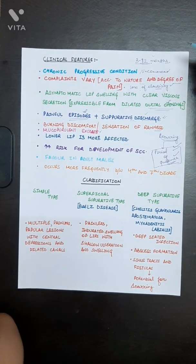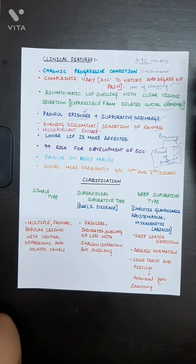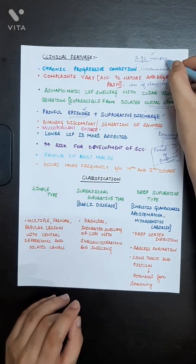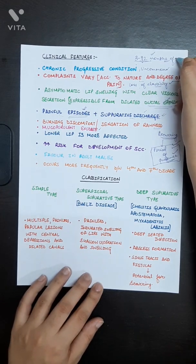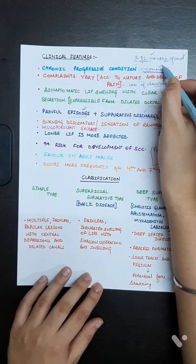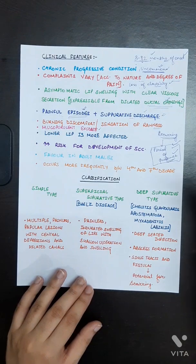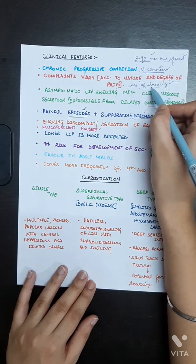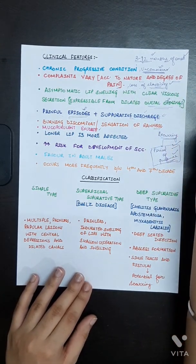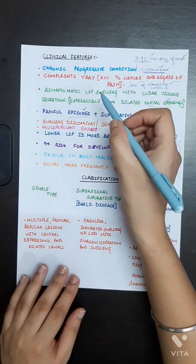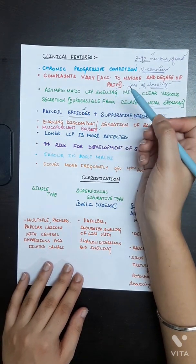The clinical features of Cheilitis Glandularis: the condition is chronic and progressive in nature. The patient typically reports to a dentist or physician after three to twelve months of onset. The condition is uncommon, and patient complaints vary according to the nature and degree of pain. Some patients even complain of loss of elasticity of the lip.